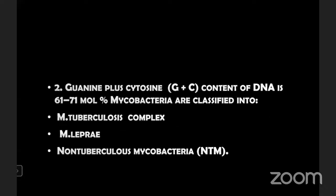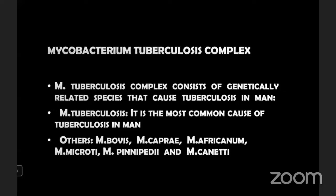The guanine plus cytosine content of DNA is 61 to 71 mole percentage in mycobacteria. Mycobacteria is classified into: mycobacterium tuberculosis complex, mycobacterium leprae, and non-tuberculous mycobacteria. The mycobacterium tuberculosis complex consists of genetically related species that cause disease mainly in humans, and is the most common cause of tuberculosis in man. Other species include mycobacterium bovis, mycobacterium caprae, mycobacterium africanum, mycobacterium microti, mycobacterium pinnipedi, and mycobacterium canettii.